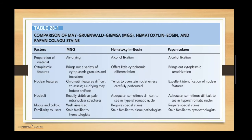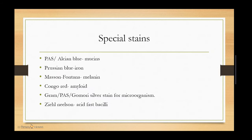Comparing the three stains: material preparation for Giemsa requires air drying, while Hematoxylin and Eosin and Papanicolaou require alcohol fixation. Cytoplasmic features are best shown by Giemsa; H&E offers little cytoplasmic differentiation; Pap stain demonstrates cytoplasmic keratinization. Nuclear features are excellent with Pap stain; H&E tends to overstain nuclei unless carefully performed. Nucleoli are readily visible as pale intranuclear structures in Giemsa, while they can be difficult to see in hyperchromatic nuclei with both H&E and Pap stain. Mucus and colloid are well visualized in Giemsa but require special stains with H&E and Pap.